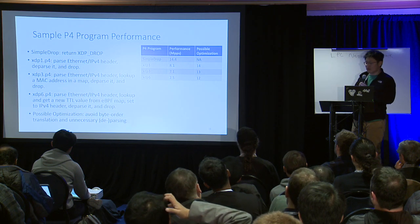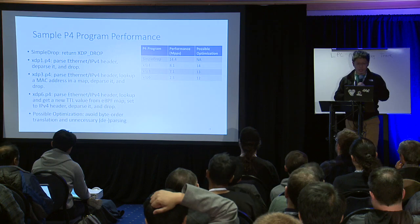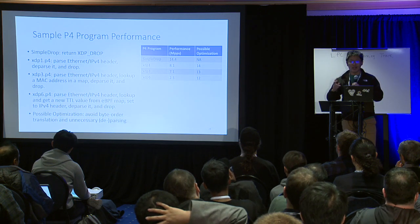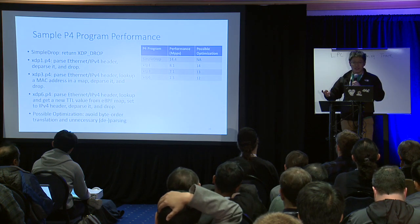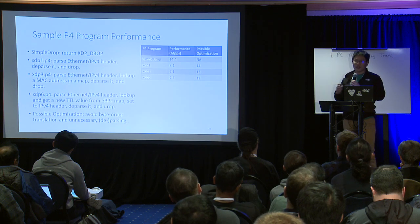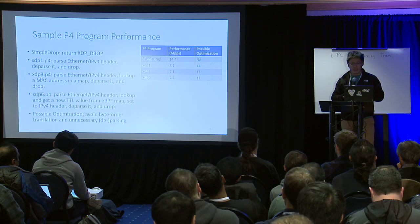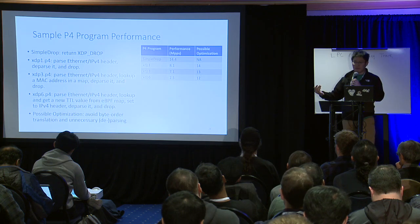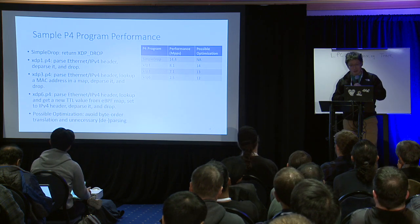The drop in XDP6 performance is pretty large. We analyzed the issue and found that the compiler-generated code has two main overheads. First, P4 users expect host byte order, but we have to convert to network byte order and back, creating multiple byte order conversions. Second, during packet de-parsing, we unconditionally write everything back into the packet even when the user hasn't touched it. If we manually remove these two overheads, performance improves significantly: 14, 13, and 12 million packets per second for the respective programs. But this shows there's still work to do in our compiler.